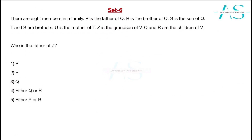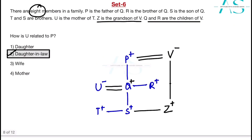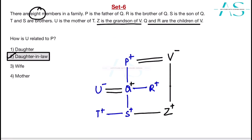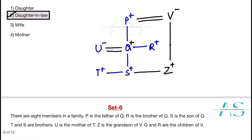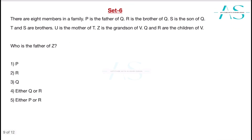Who is the father of Z? Looking at the diagram, it has to be Q. R is not married — since the family has exactly eight members and R has no spouse accounted for. Therefore Z is the son of Q, and the father of Z is Q.